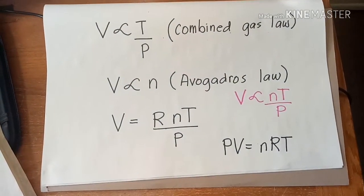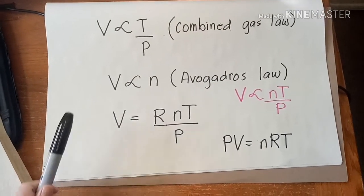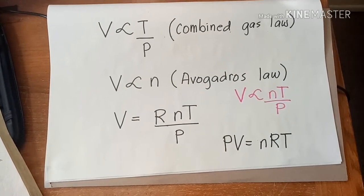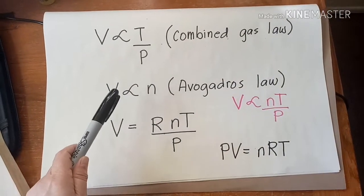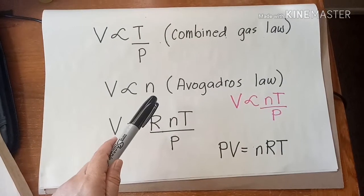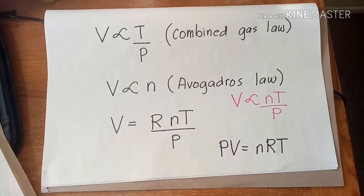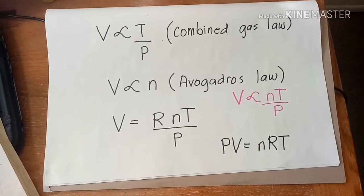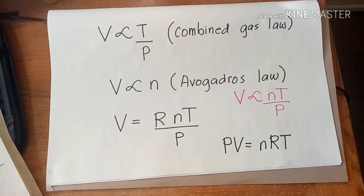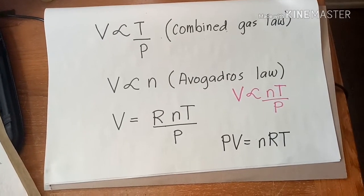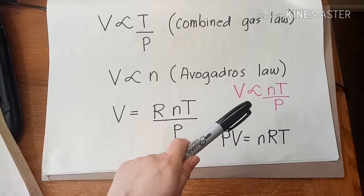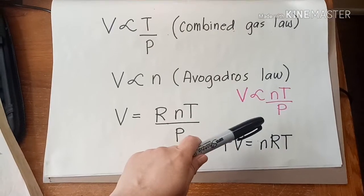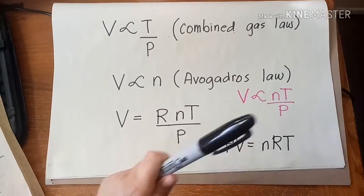On the other hand, the relationship between volume and number of moles is described by Avogadro's law, wherein volume is directly proportional to number of moles. Combining these two laws will come up with the expression that includes all the variables that affect the volume of a gas: volume is directly proportional to number of moles and temperature, and inversely proportional to pressure.